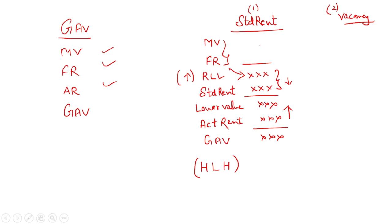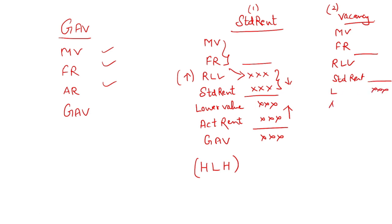Now if there is a vacancy period in the question: take Municipal Value, then Fair Rent, then Actual Rent. But since the vacancy period is minus-ed from Actual Rent, whatever your Actual Rent becomes after deducting vacancy, that itself becomes your GAV. This is slightly tricky — let me explain with an example.